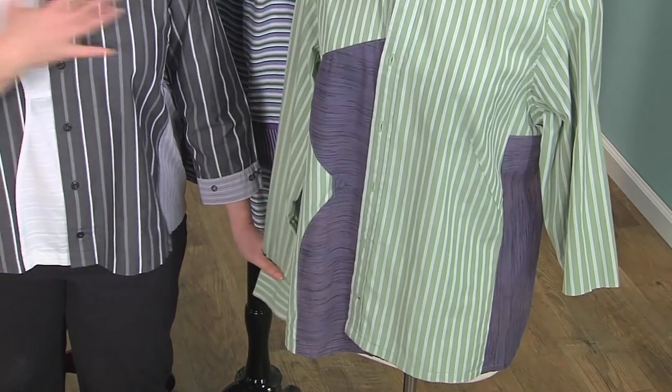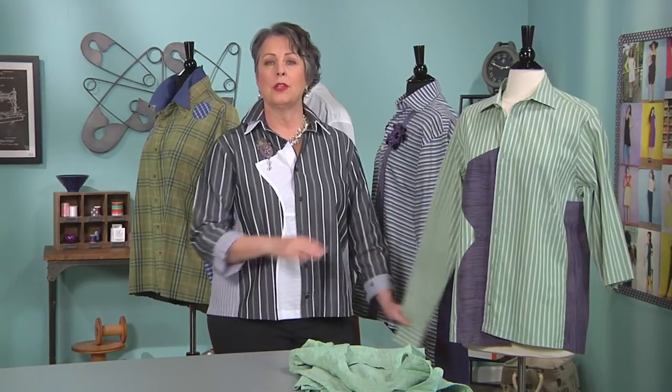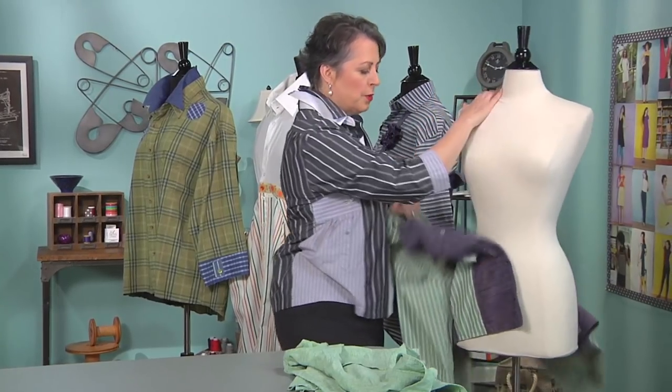The example we're going to work on today is this one. And you can see with most men's shirts, even if it fits us women across the shoulder and the bust, the sleeves are usually a little bit too long. So you can roll it up, but the easiest way to make a man's shirt look feminine is to cut off part of the sleeve and make it a three-quarter sleeve, and that's what we're going to look at.